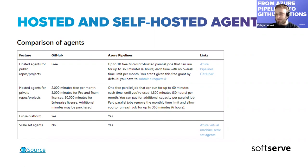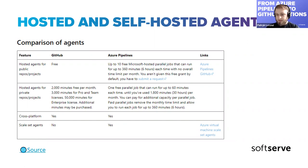For private projects on the free tier: in Azure Pipelines you had a limitation of 60 minutes per job and 1,800 minutes per month. In GitHub Actions you have around 2,000 minutes. So a little more but still kind of similar. Of course you have more for the Pro and Team licenses. Cross-platform support: because the agents use the same executable under the hood, you can run them on Linux, Windows, or Mac.